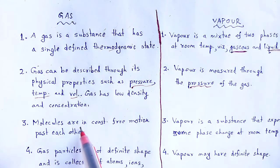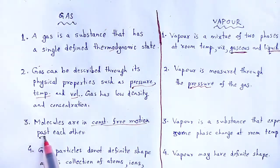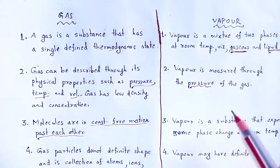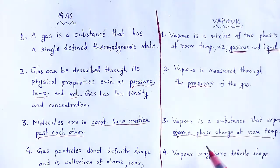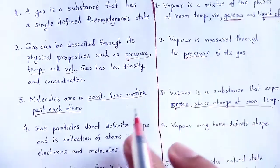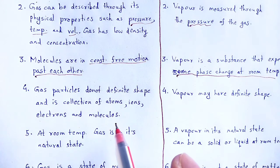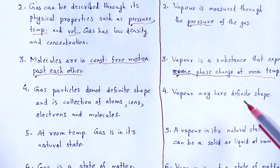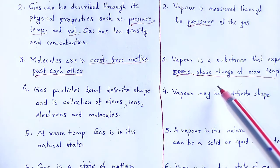Next point: In gas, molecules are in constant free motion past each other. But in the case of vapour, it is a substance that experiences some phase change at room temperature. In gas, the particles do not have a definite shape and it is a collection of atoms, ions, electrons, and molecules. But vapour may have a definite shape — here the particles have a definite shape.